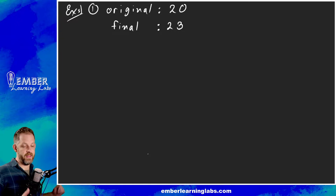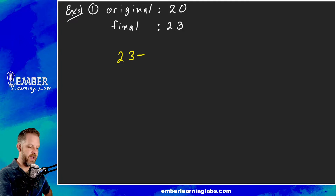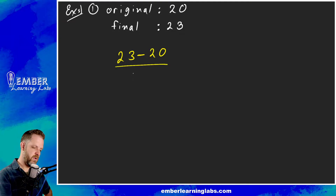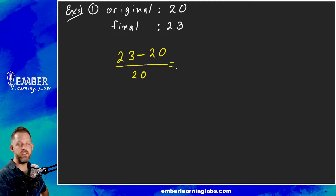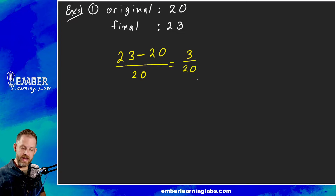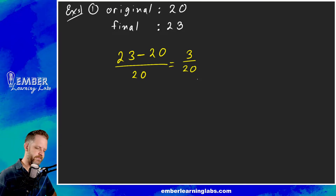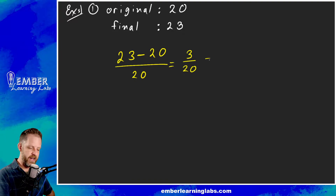When we're finding a change — a delta, which you'll see a lot in science classes — we take the final and subtract the initial. So the final is 23, we subtract the original which is 20, and divide that by the original, 20. So 23 minus 20 is 3, and we divide that by 20. For these, we want to get the decimal equivalent, so 3 divided by 20 equals 0.15.